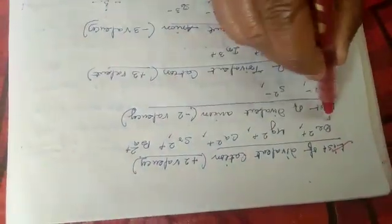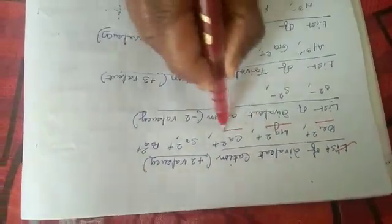List of divalent cations: Beryllium 2+, magnesium 2+, calcium 2+, strontium, barium 2+. Similarly, divalent anions: oxygen 2-, sulfur 2-.